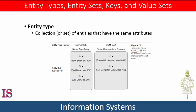The basic object that the ER model represents is an entity, which is a thing in the real world with an independent existence. An entity may be an object with a physical existence — for example, a particular person, car, house, or employee — or it may be an object with a conceptual existence, such as a company, a job, or a university course.